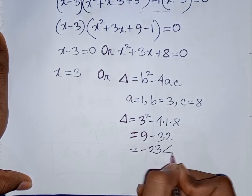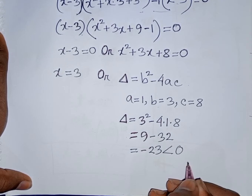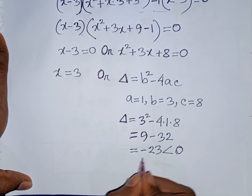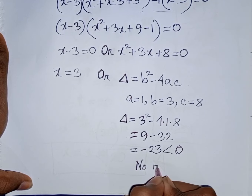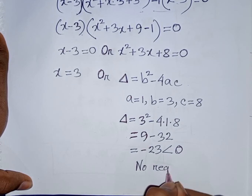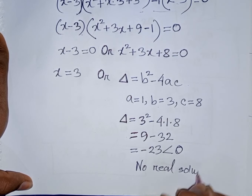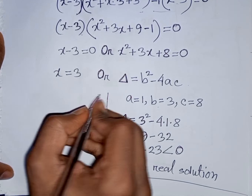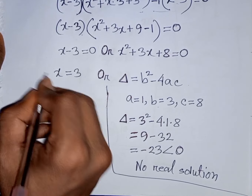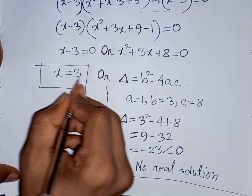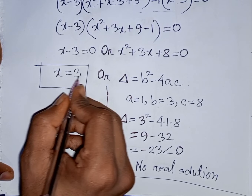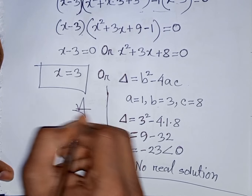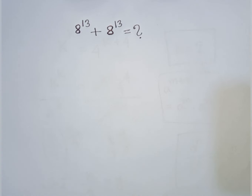So, minus 23 is less than 0, so here there is no real solution from the quadratic. Therefore, our final answer will be x is equal to 3. This is the value of x.